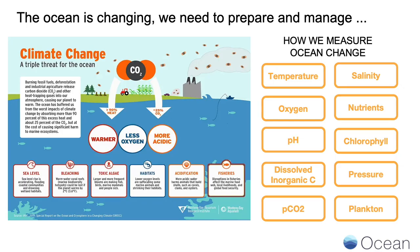One of the things that makes managing the ocean particularly complicated is it's always changing, and it's changing faster now than ever, thanks in large part to climate change. Climate change and the emissions of carbon dioxide and other greenhouse gases to the atmosphere cause three kinds of change in the ocean at a minimum: oceans are becoming warmer, oceans are holding less oxygen, and oceans are becoming more acidic.